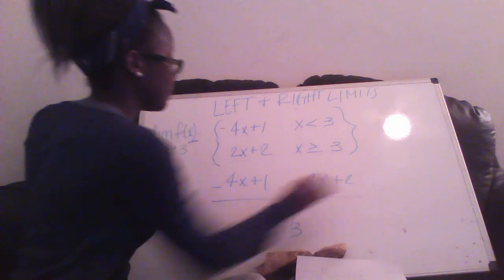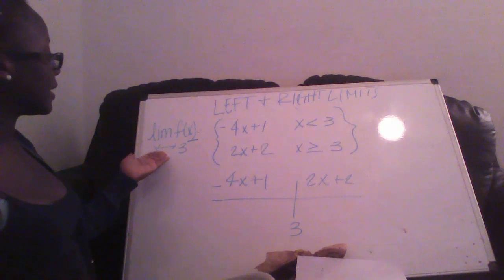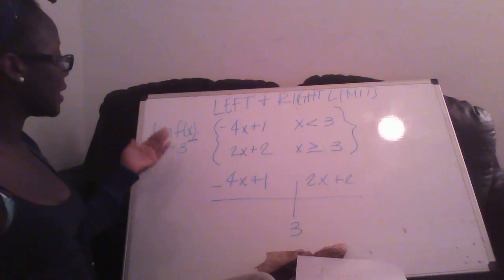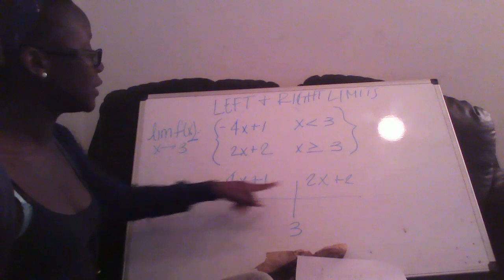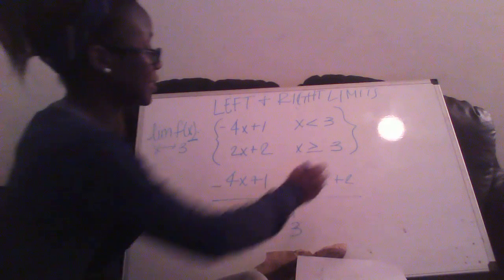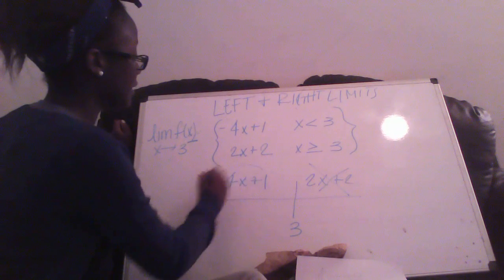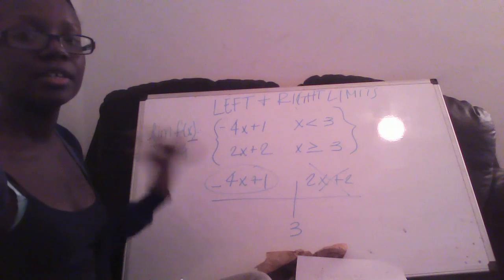This problem is asking for x approaching from the left side, which means the right side is automatically cancelled out. And then this is the equation that we would use to solve our problem.